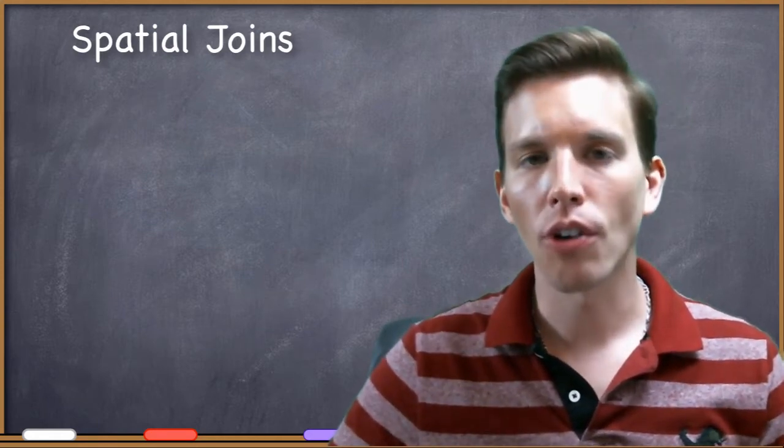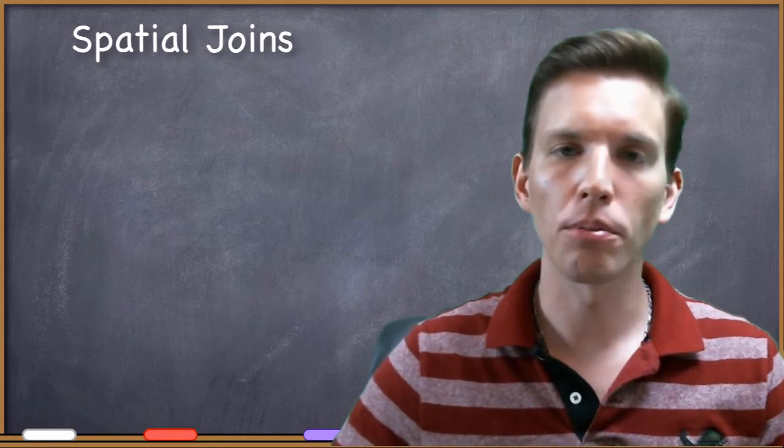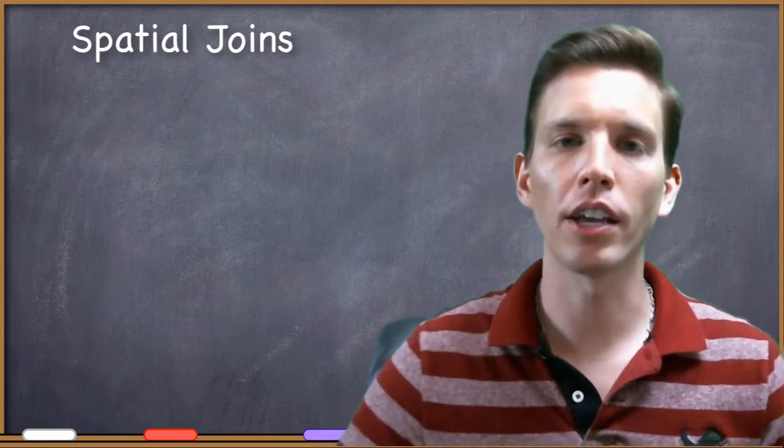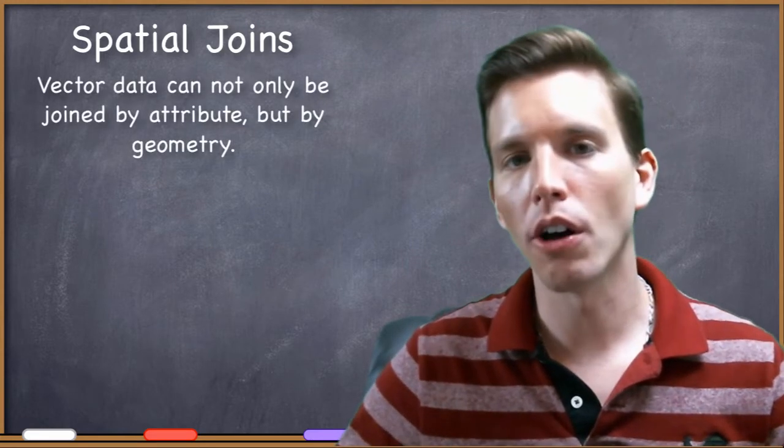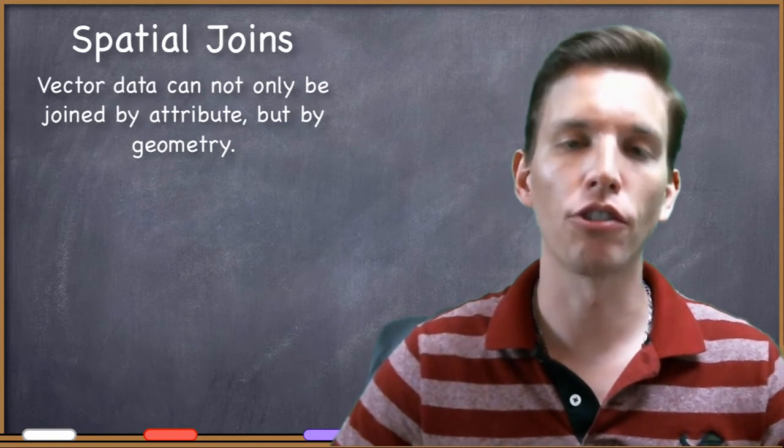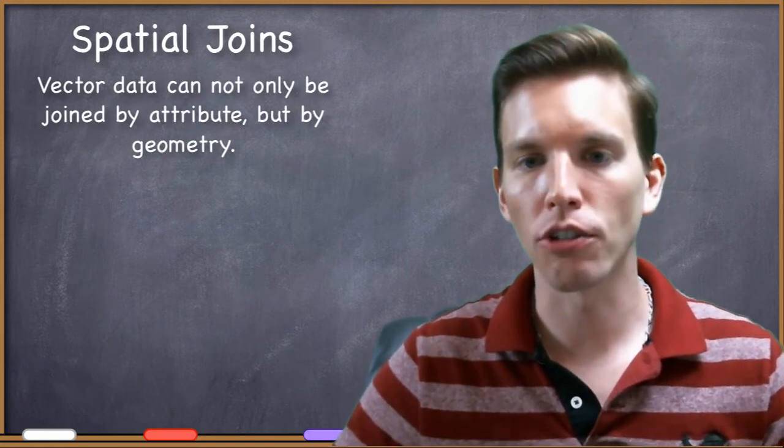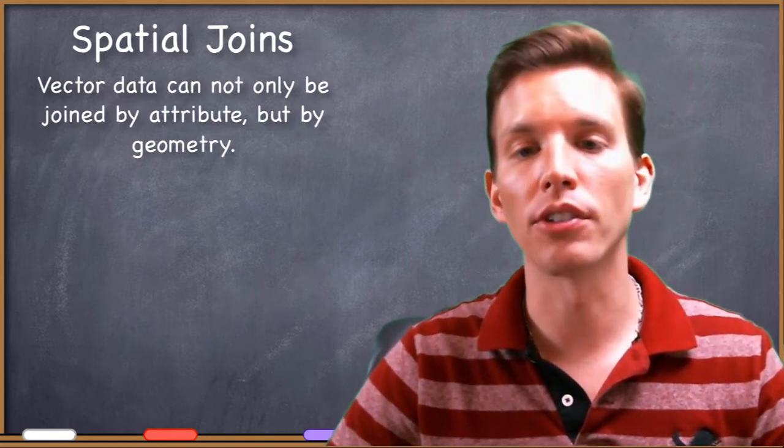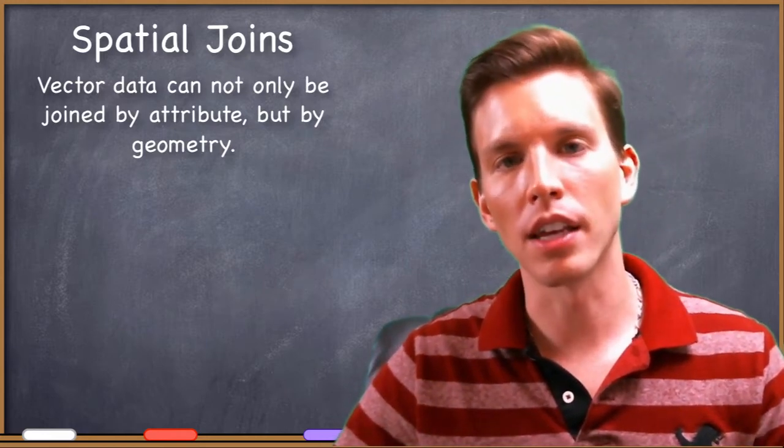Since we are talking about vector data, it probably isn't going to surprise you that we can not only execute joins based on attributes with a table join, as we've been talking about, but we can also execute joins based on geometry, and that's with a spatial join, although a spatial join is a little bit different in concept from the table joins.